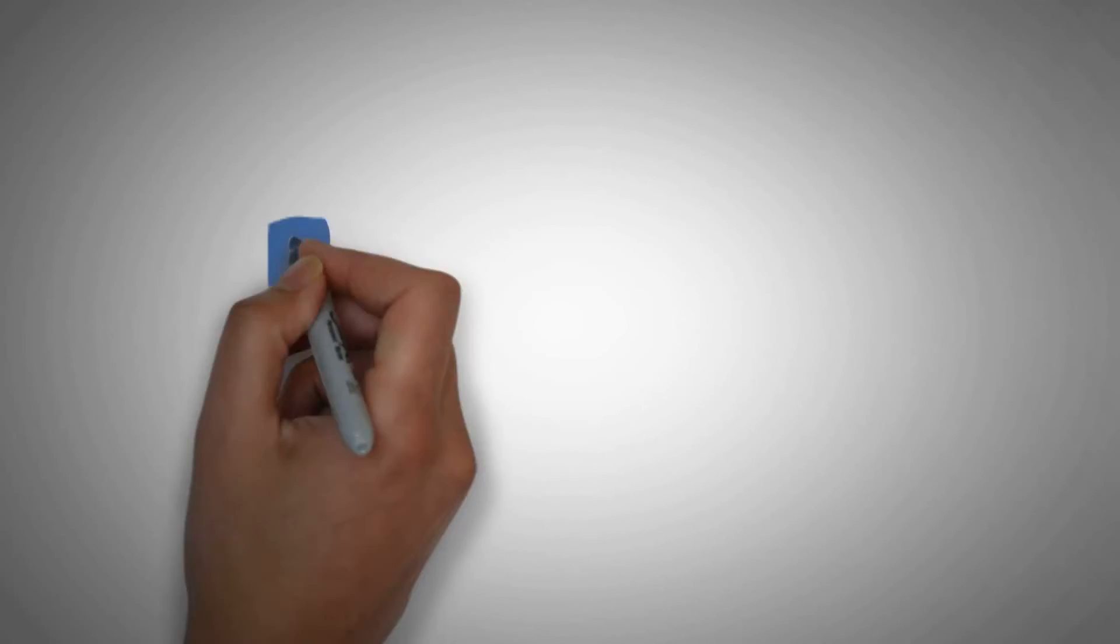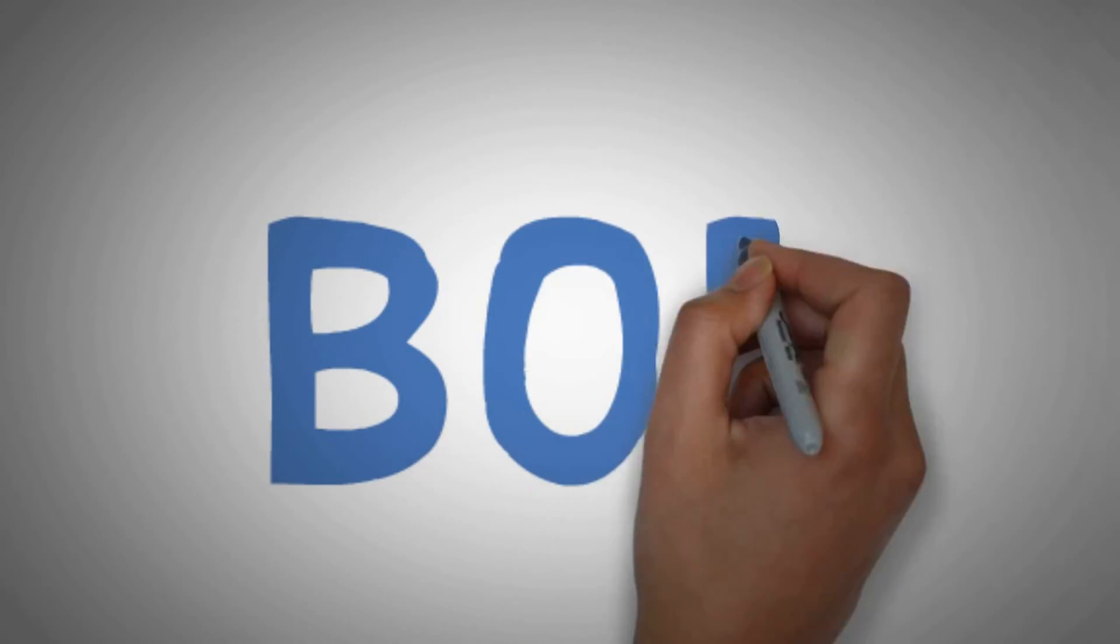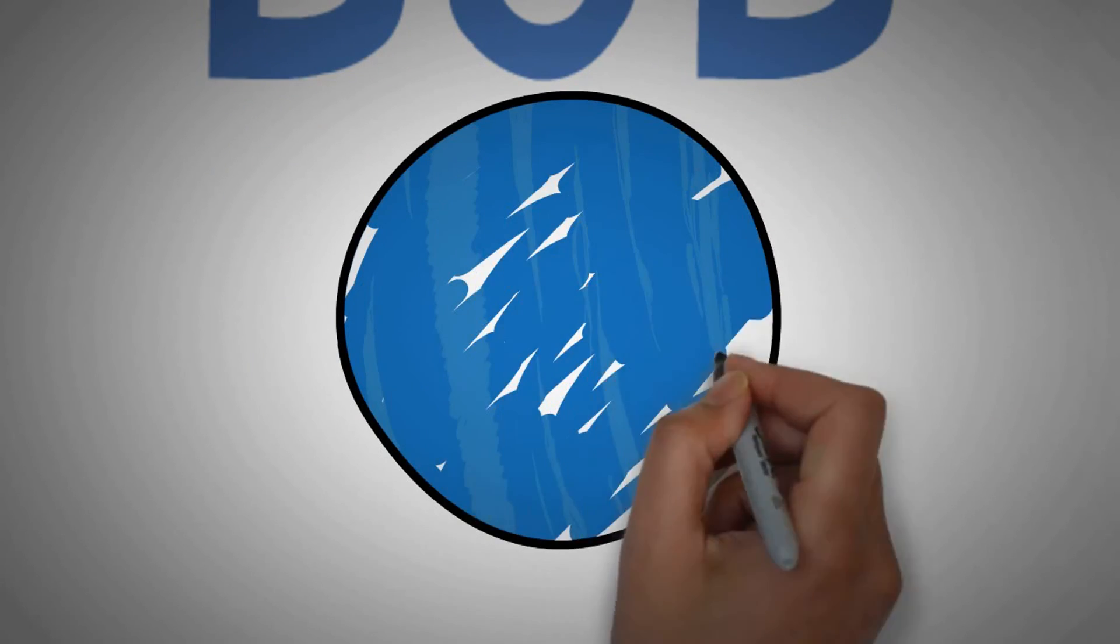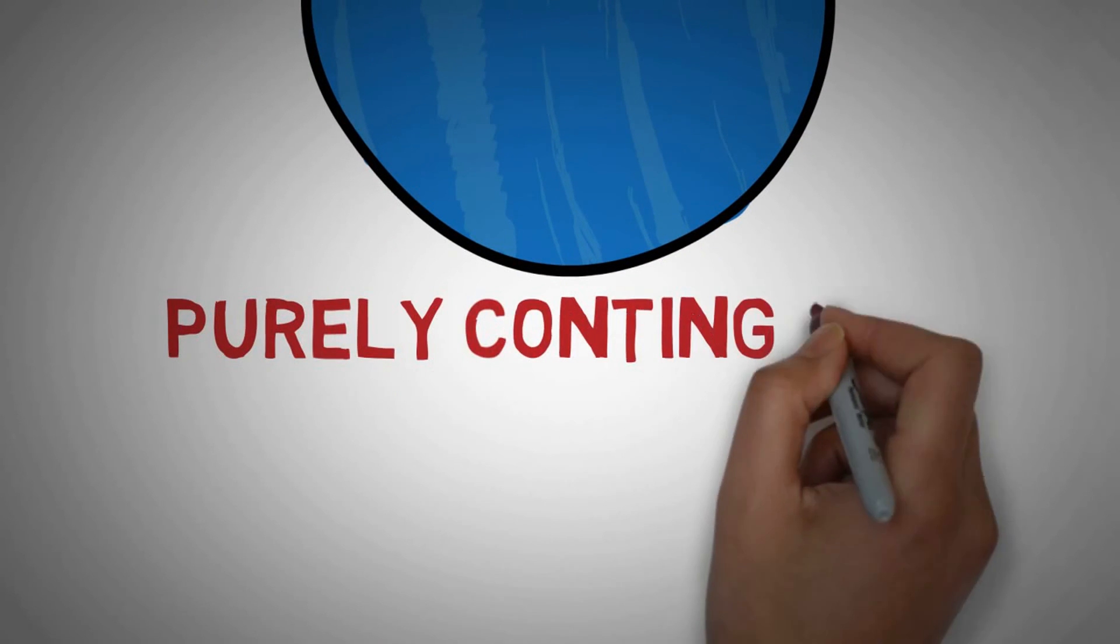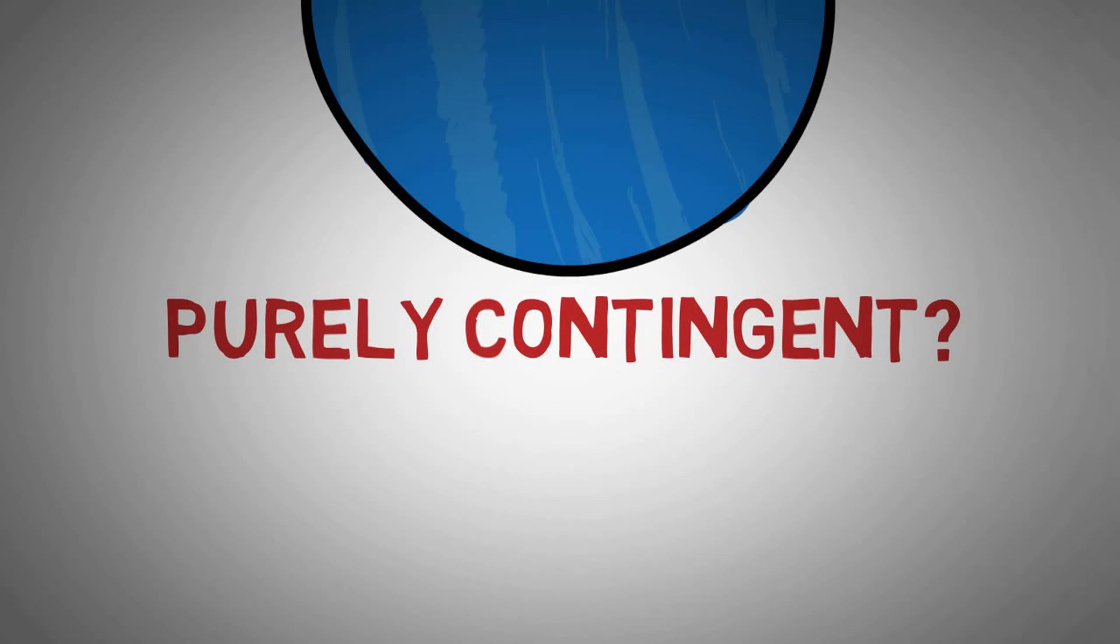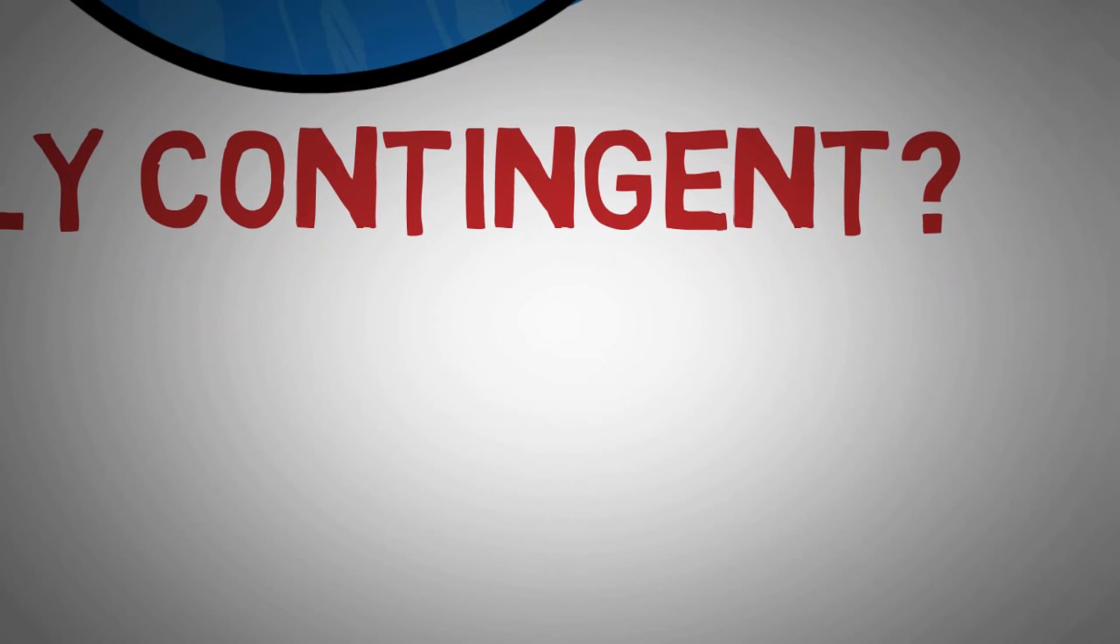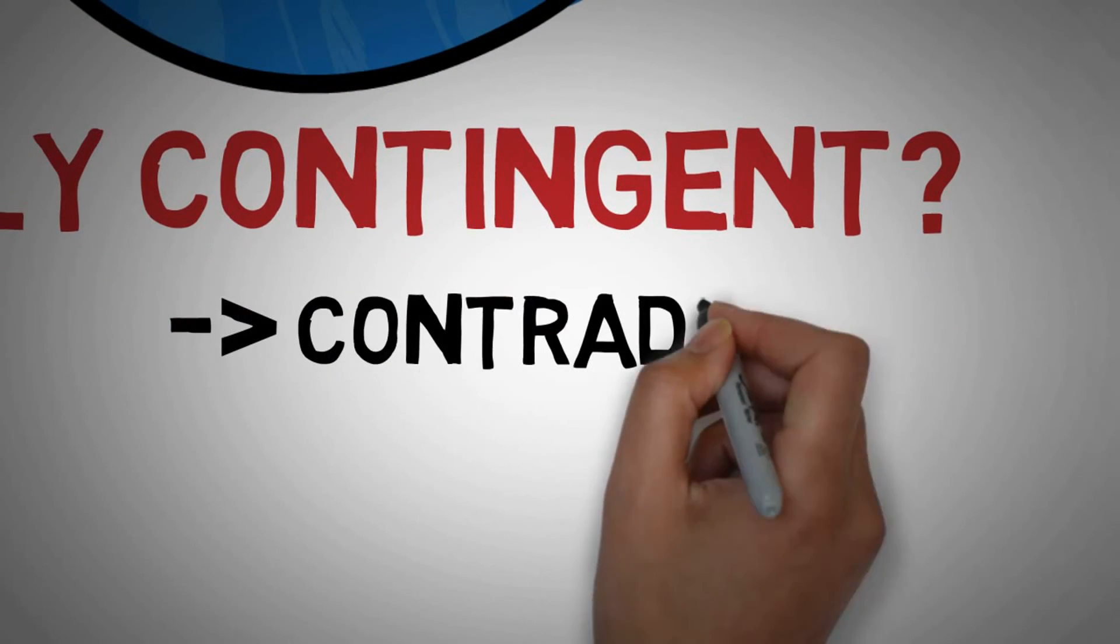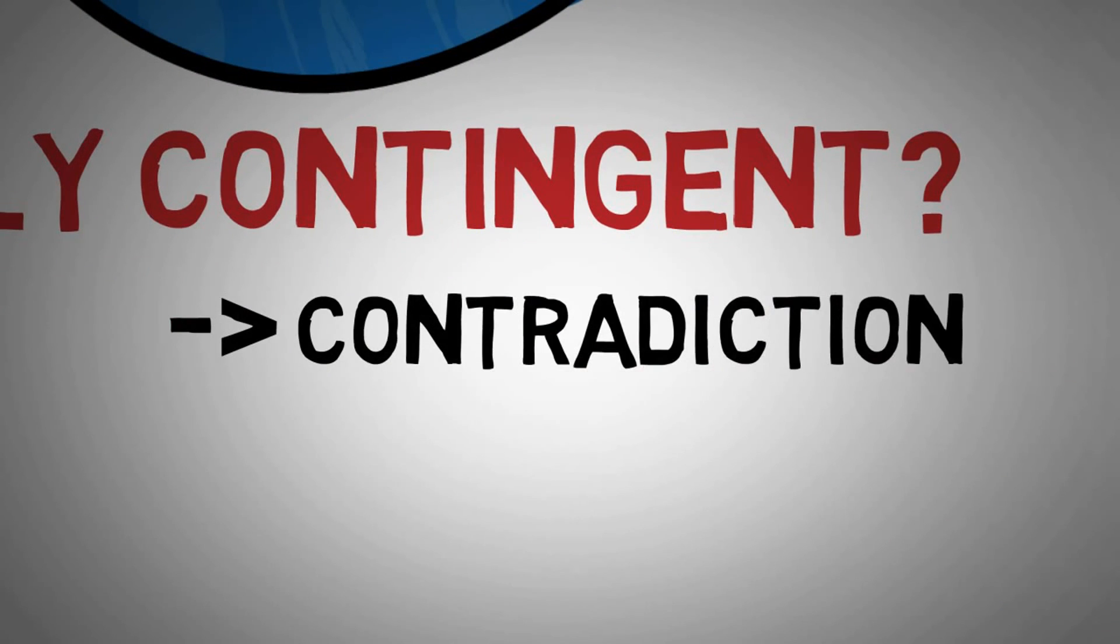Let us take a step back and put the argument together. Imagine Bob is the totality of all things. Bob includes everything. People, particles, planets, everything. Now, either Bob is purely contingent or not. If Bob is purely contingent, then by the dependence principle, Bob has an outside source. Bob depends on something beyond Bob. But that's contradictory because there is nothing beyond Bob. By definition, Bob includes everything.